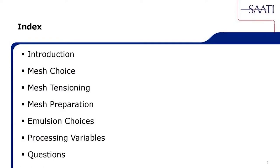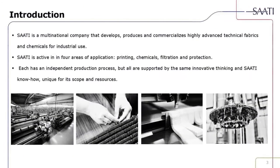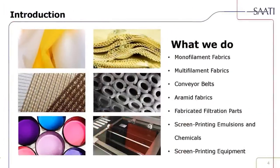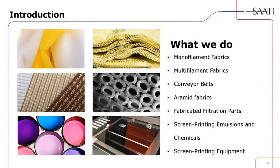Here's a short index of the topics we'll be going over. Saudia is a multinational company that develops, produces, and commercializes highly advanced technical fabrics and chemicals for industrial use. Saudia is active in four areas of application: printing, chemicals, filtration, and protection. Each has an independent production process, all supported by the same innovative thinking — that Saudia know-how, unique for its scope and resources. We manufacture monofilament fabrics, multifilament fabrics, conveyor belts, aramid fabrics also known as Kevlar, fabricated filtration parts, screen printing emulsions and chemicals, and screen printing equipment.